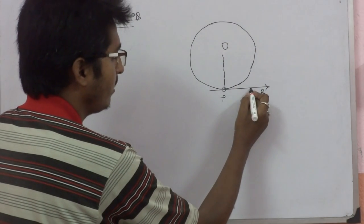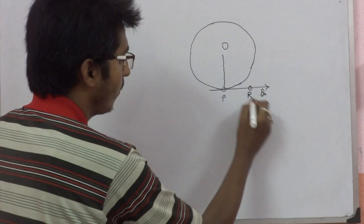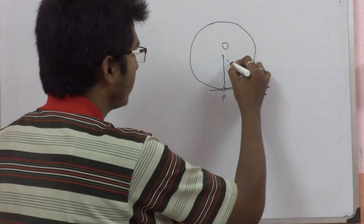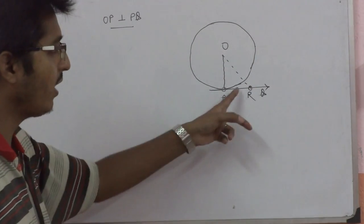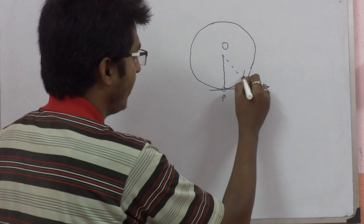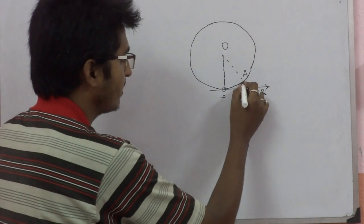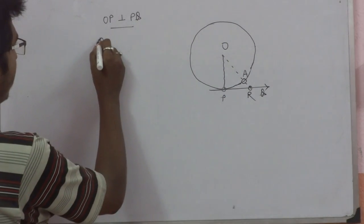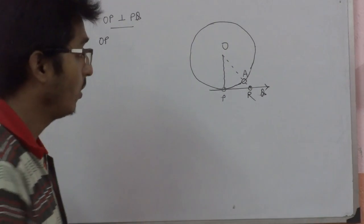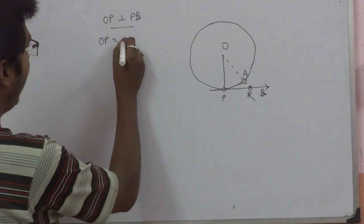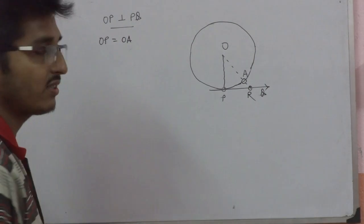Let us take a point R on PQ and join this. So we have OR. OR intersects the circle at the point A. Suppose this is A. So what is OP? Radius. What is OA? It is also radius. So obviously, they are equal.